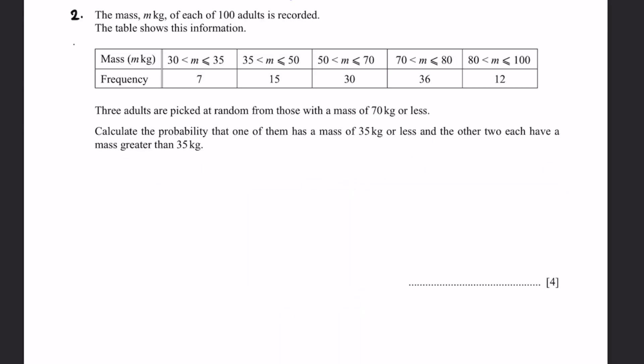Let's go to question 2. The mass m kg of each 100 adults is recorded. The table shows this information. Mass in m kg and frequency are given in the table. 3 adults are picked at random from those with a mass of 70 kgs or less. Calculate the probability that one of them has a mass of 35 kgs or less, and the other two each have a mass greater than 35 kgs.